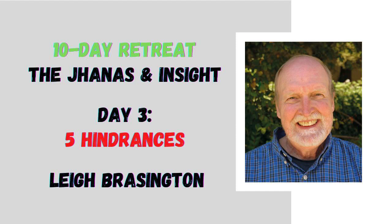I want to pick up where we left off last night, which was the Four Noble Truths, which included the Eightfold Path, which included Right Concentration. Right Concentration was defined as the Four Jhanas, and the description of the Four Jhanas starts off secluded from sense desires, secluded from unwholesome states of mind. This refers to the abandoning of the five hindrances. The hindrances get mentioned quite a lot — they're mentioned in the fourth establishment of mindfulness and show up in the gradual training just before the Jhanas. Basically, the abandoning of the hindrances is what we're after when we're generating access concentration.